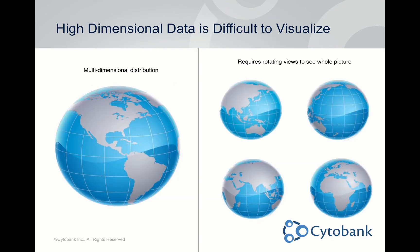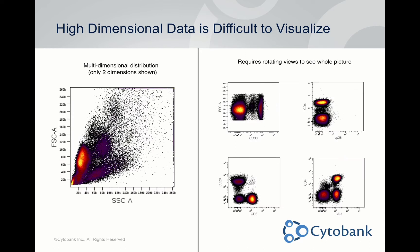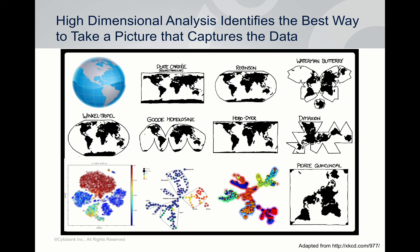I like to think about high-parameter data as an object, just like a globe is a multi-dimensional object. To really understand what's on the surface of a globe you have to rotate it, and the same is true with your data. Machine learning algorithms can help by reducing the dimensions, just like a globe reduces to a map — and there are several kinds of map projections. The same is true with these tools. Today we'll be talking specifically about FlowSOM.